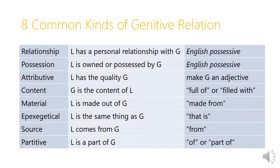I know this has been a lot to absorb at once, and I don't expect you to remember exactly how all eight common kinds of genitive relationship work — we'll be reviewing and practicing in the Paideia exercises. Here's a nice overview of these eight common kinds: genitive of relationship, personal relationship, possession, attributive genitive, genitive of content, genitive of material, ep-exegetical genitive, genitive of source, and partitive genitive.